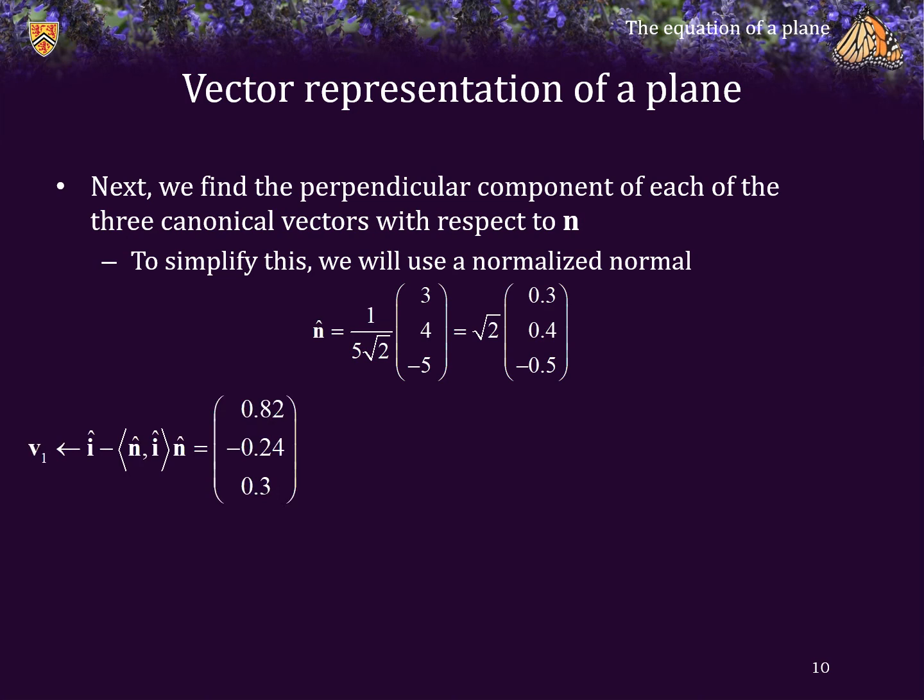So, therefore, V1 is 1, 0, 0, minus the projection of this onto the normal. V2 is 0, 1, 0, minus the projection onto the normalized normal. And V3 is 0, 0, 1, minus its projection onto the normalized normal.